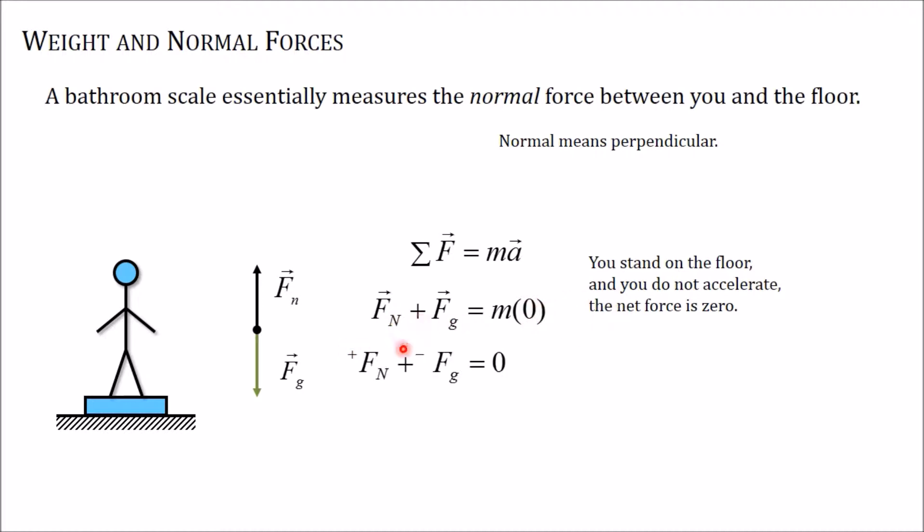When you take this into an algebra equation, the normal force is pointing in the positive upwards direction, the force of gravity is pointing in the negative downwards direction. And again, the net force is equal to zero. So, it turns out that the normal force is equal to the gravitational force. And again, this is if the floor is perfectly level.